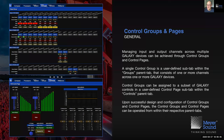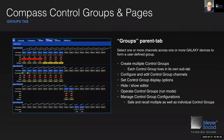Control pages and control groups allow us to manage multiple channels across multiple Galaxy devices. A control group can be thought of as a user-defined sub-tab within a Groups parent tab, consisting of one or more channels across one or more Galaxy devices. Those groups can then be assigned to controls in a user-defined control page, which lives within its own Controls parent tab.